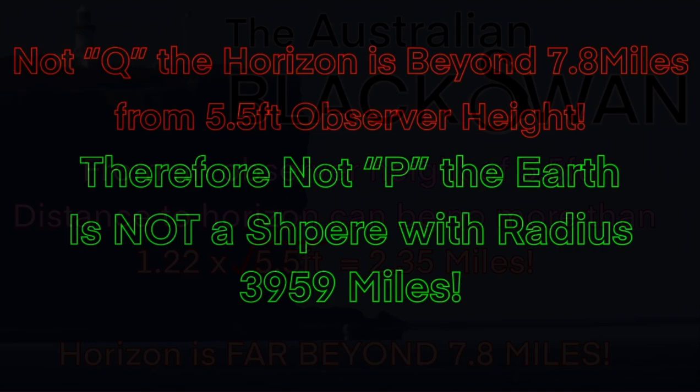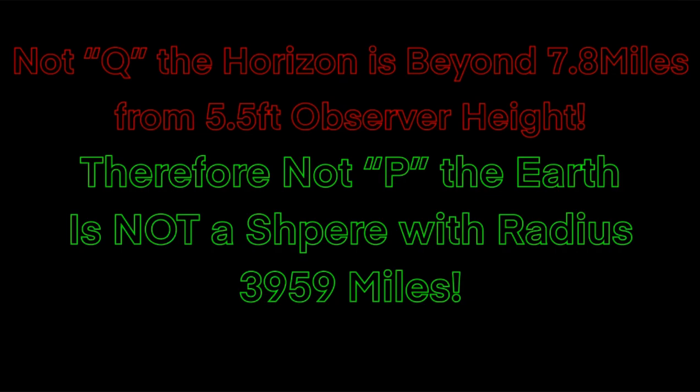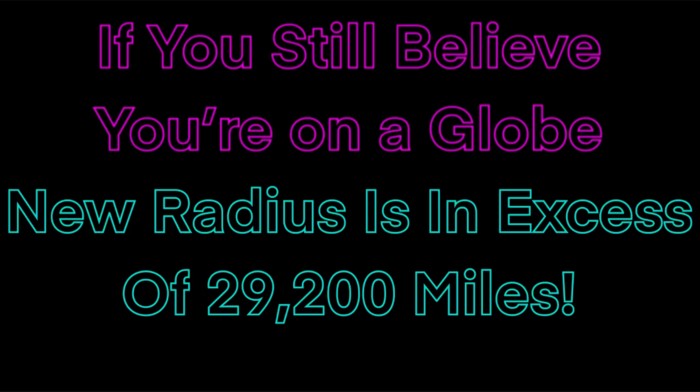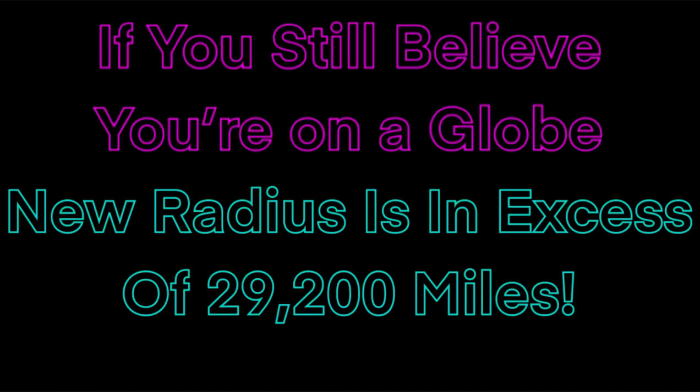So to complete the modus tollens — not Q: the horizon is beyond 7.8 miles from a 5.5-foot observer height. Therefore not P: the earth is not a sphere with a radius of 3,959 miles. But if you still believe you're on a globe, maybe it's just a bigger radius, which would be in excess of 29,200 miles. The Australian Black Swan has absolutely destroyed the globe.